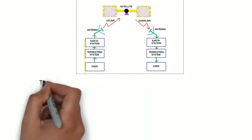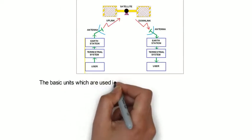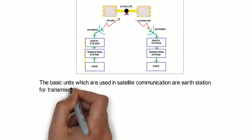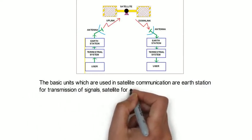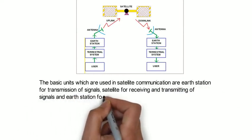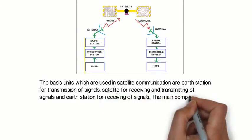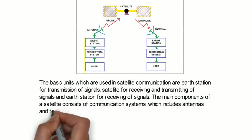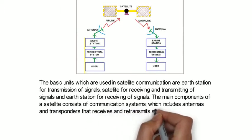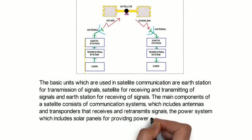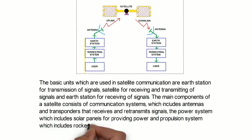The basic units which are used in satellite communication are Earth Station for transmission of signals, Satellite for receiving and transmitting of signals, and Earth Station for receiving of signals. The main components of a satellite consist of communication systems which include antennas and transponders that receive and retransmit signals, the power system which includes solar panels for providing power, and the propulsion system which includes rockets to propel the satellite.